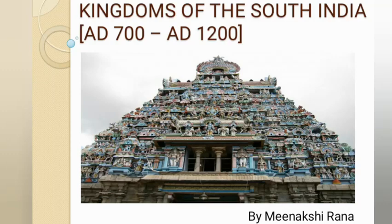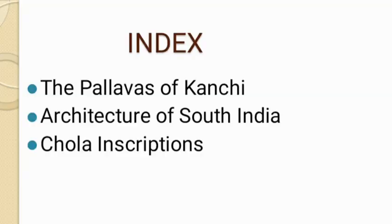Good morning students, this is Meenakshi Rana and today I am going to teach you history chapter number three of class seventh. The chapter name is 'Kingdoms of the South.' In this chapter you will learn about the Pallavas of Kanchi, architecture of South India, and Chola inscriptions.